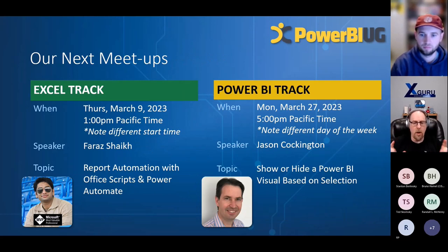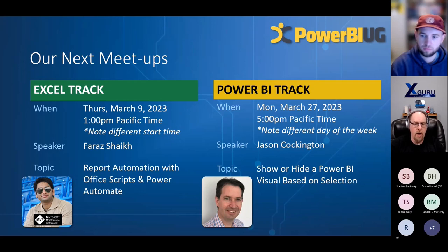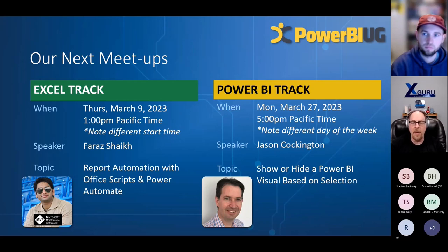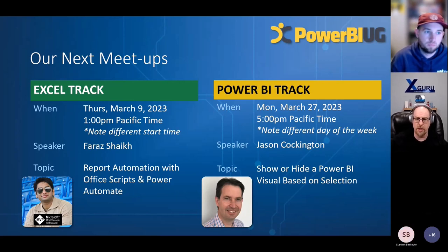Our next meetup is coming up. Just a quick note on both of these meetups — they have different dates and times from our normal slots. Our Excel track is going to be on Thursday March 9th, but it's going to be at 1 p.m. Pacific time, about four hours earlier, because we're bringing in a speaker who's coming to us live from Dubai — he's going to be talking about report automation with Office Scripts and Power Automate. Then on March 27th, a Monday, Jason Cockington is joining us from Sydney, Australia, presenting on how to show or hide a Power BI Visual based on selection. Jason actually works with Matt Ellington as one of Matt's trainers for Power BI.